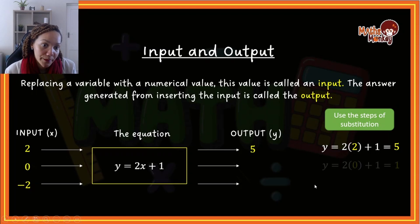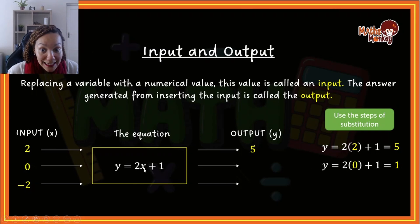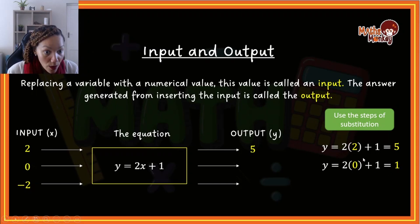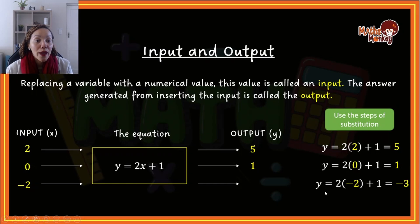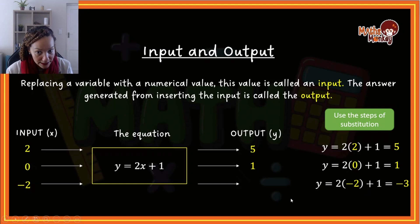Let's do another example. Input of 0 goes into the equation: 2 times 0 plus 1 equals 1, so the output for 0 is 1. And for the last one, substituting negative 2: 2 multiplied by negative 2 is negative 4, plus 1 gives negative 3. So the output for input negative 2 is negative 3. The equation y equals 2x plus 1 is the rule, x is the input, and y is the output.